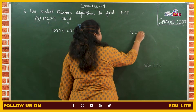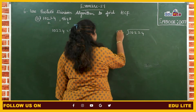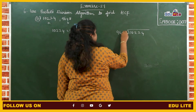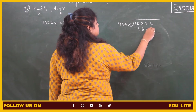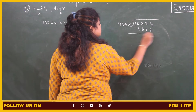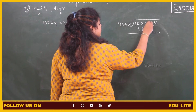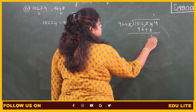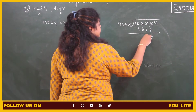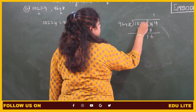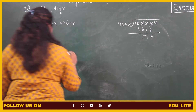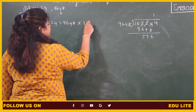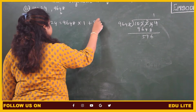10224 divided by 9648: 1 times 9648, remainder 576. So 9648 into 1 plus 576.